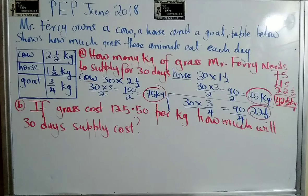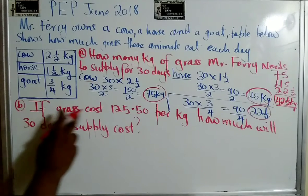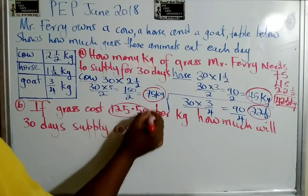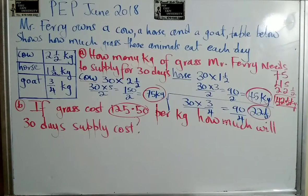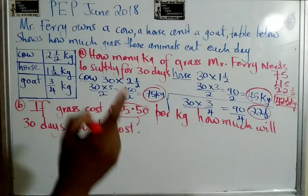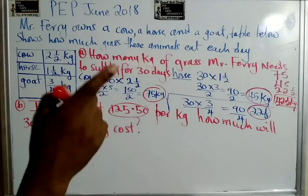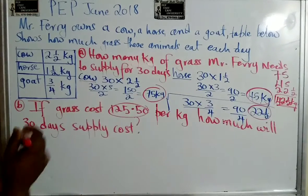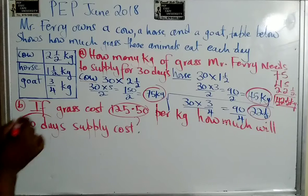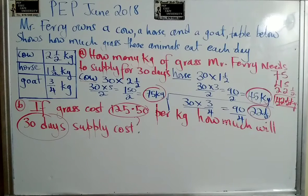Now this one says if the grass costs $125.50 per kilogram. Somebody tell the person who set these papers — I mean, I understand but CSEC is not doing that, GCSE is not doing that, CTNG is not doing that. Why are you doing that? These poor kids have to work this out without a calculator in a time limit.